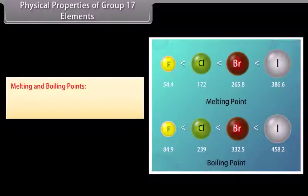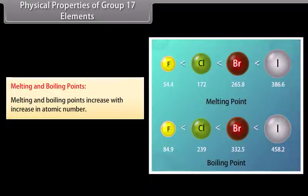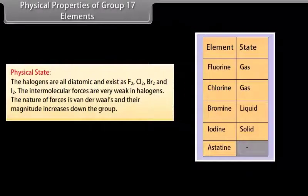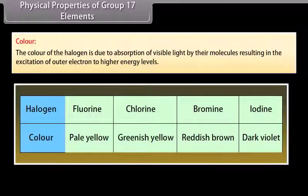Physical properties of group 17 elements — melting and boiling points: These increase with atomic number, indicating that the strength of intermolecular forces of attraction increases with atomic number. Physical state: Halogens are all diatomic, existing as F₂, Cl₂, Br₂ and I₂. The intermolecular forces are Van der Waals, and their magnitude increases down the group. Thus F₂ and Cl₂ are gases, bromine is a volatile liquid, and iodine is a volatile solid. Color deepens down the group due to absorption of visible light causing excitation of outer electrons to higher energy levels.